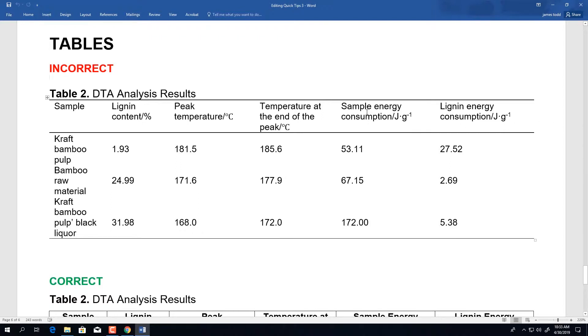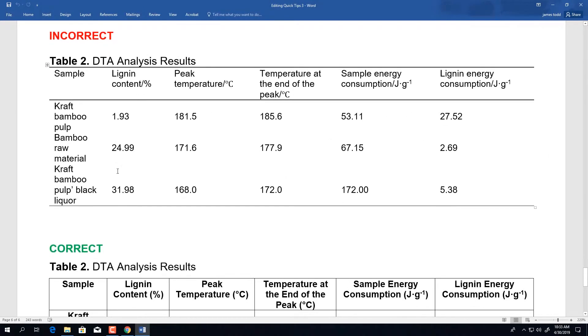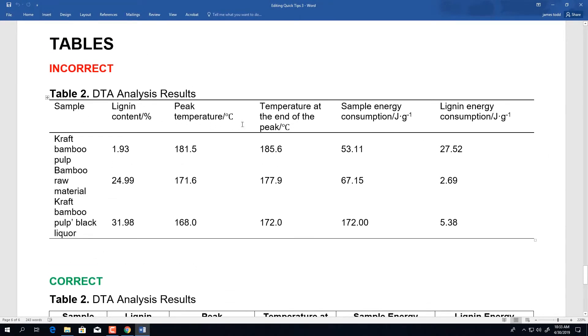First, we are going to take a look at a table that was submitted that are missing some of our journal guidelines. Off the top of our head, we see that we are missing all of the borders that surround the table, as well as the correct formatting for the column headings.